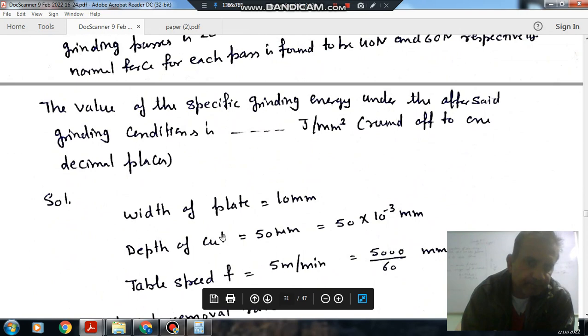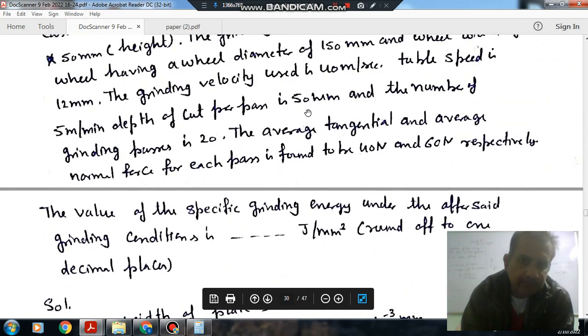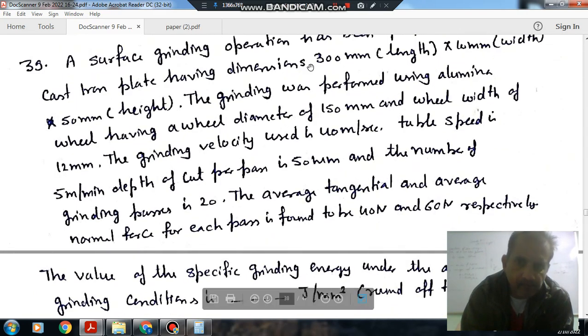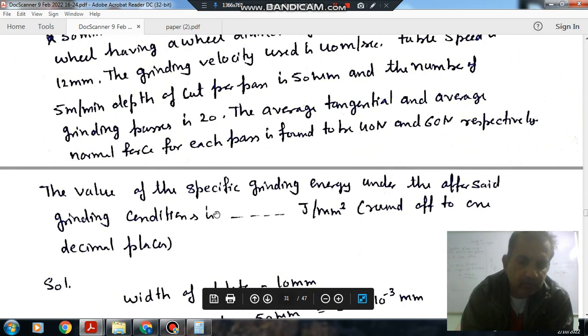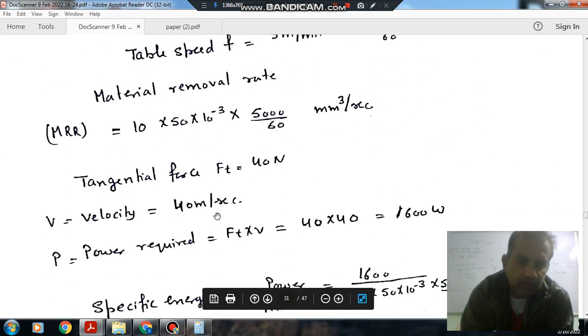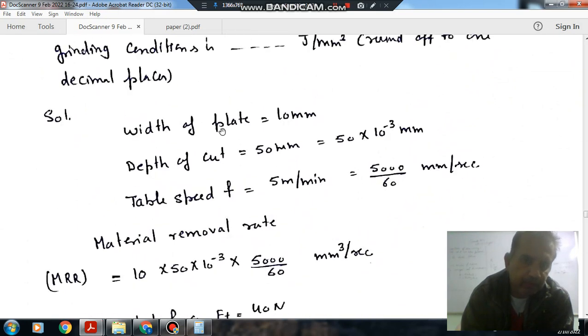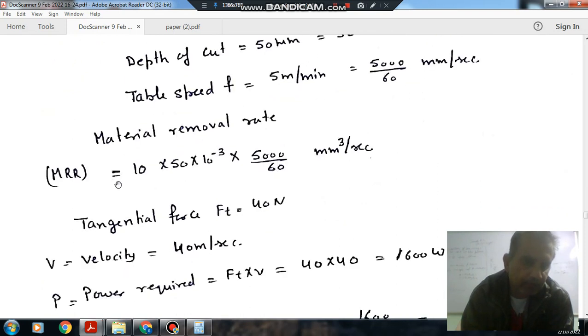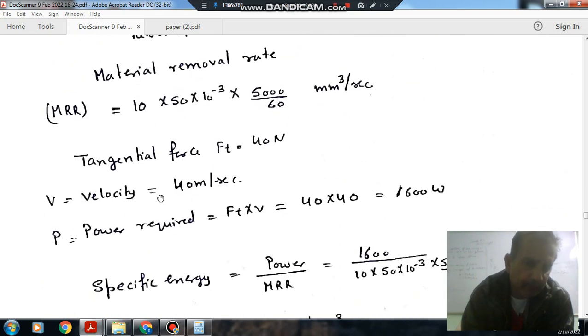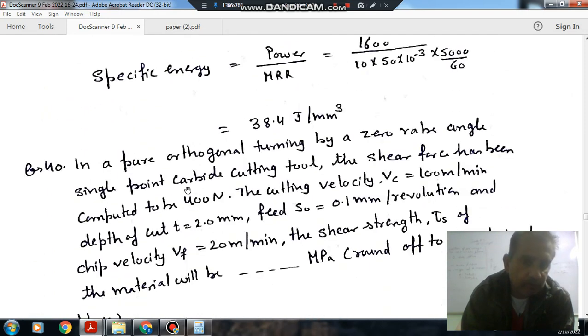In this problem, the number of passes, length and other dimensions are not needed here. Only the things used are width of plate, depth of cut and table speed to calculate the MRR, and to calculate power we use tangential force and velocity. The answer here is 30.4.